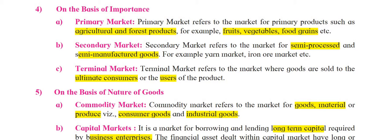The fourth type of market is based on the basis of importance. We have heard about primary market and secondary market in lower classes. So on the basis of importance, the first one is primary market. Primary market refers to the market for primary goods or primary products such as agricultural and forest products — like fruits, vegetables, food grains, crops, etc. — coming directly from nature. These markets are specially for primary products.